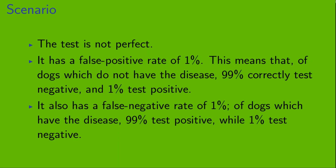The test is not perfect. It has a false positive rate of 1%. This means that of dogs which do not have the disease, 99% of them will correctly test negative, but 1% will test positive. It also has a false negative rate of 1%. So of dogs which have the disease, 99% will correctly test positive, but 1% of them will test negative.